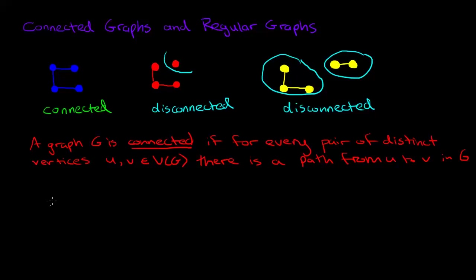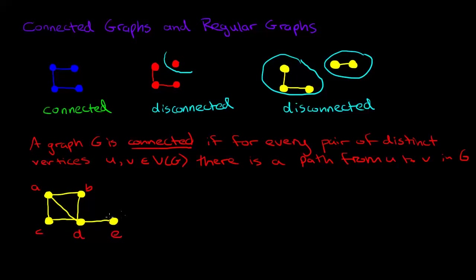The next important idea is to get into what is a regular graph, and in order to understand that we need to first look at something that we call the neighborhood of a vertex. So let's draw an example. Here I've drawn a small example on five vertices, and if I look at a particular vertex — for example the vertex a — and I ask what is its neighborhood, all I'm asking is what are the other vertices which are adjacent to a.